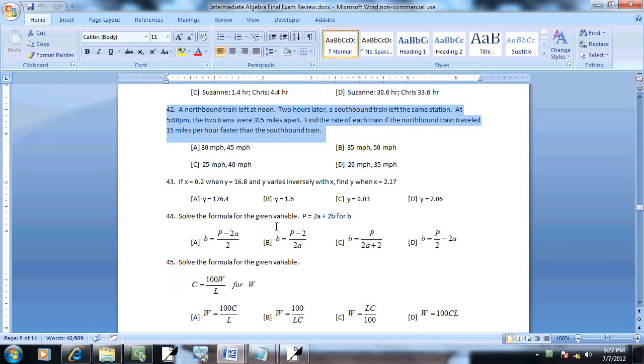Let's take a look at number 42. Northbound train left at noon, two hours later southbound train left the same station. At 5 p.m. the two trains were 315 miles apart. Find the rate of each train if the northbound train traveled 15 miles per hour faster than the southbound train.